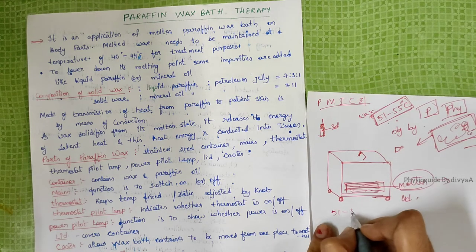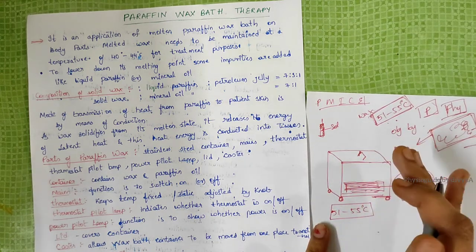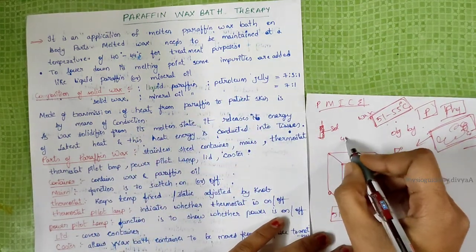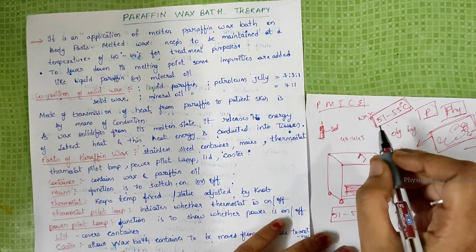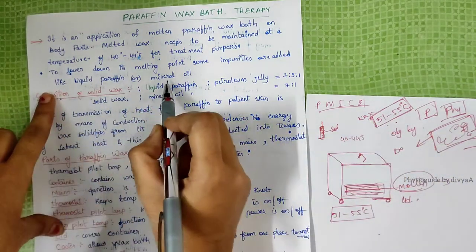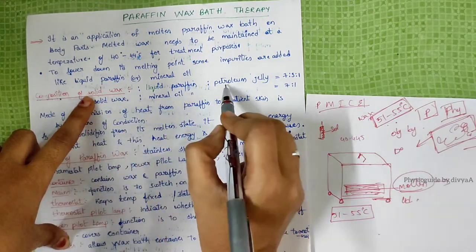If we heat solid wax, it will go up to 51 to 55 degrees centigrade. To decrease it and maintain it at 40 to 44 degrees so patients can tolerate it, we add some impurities like liquid paraffin or mineral oil.